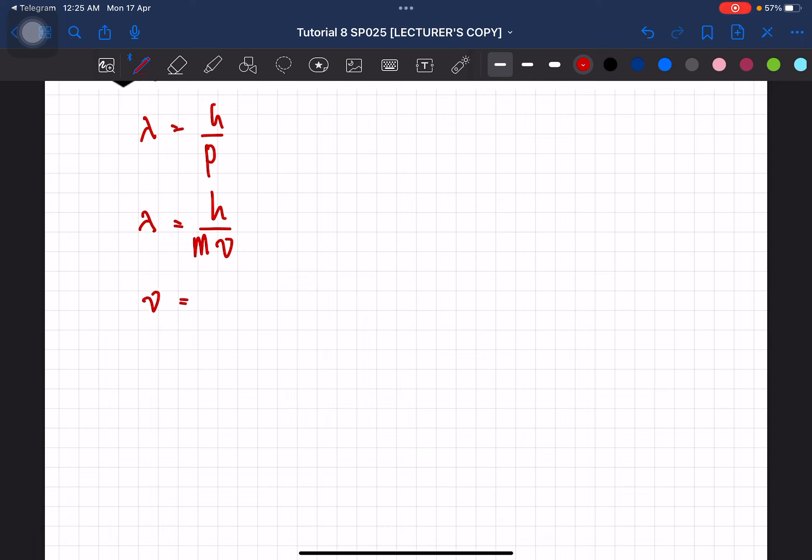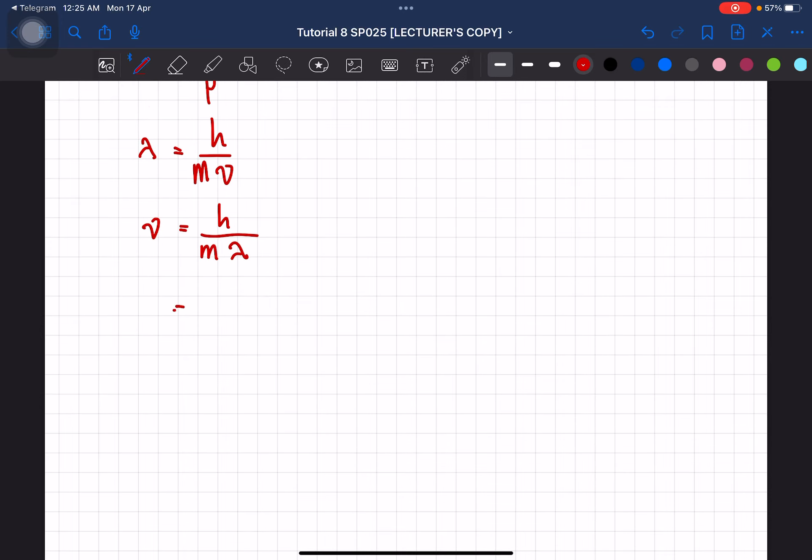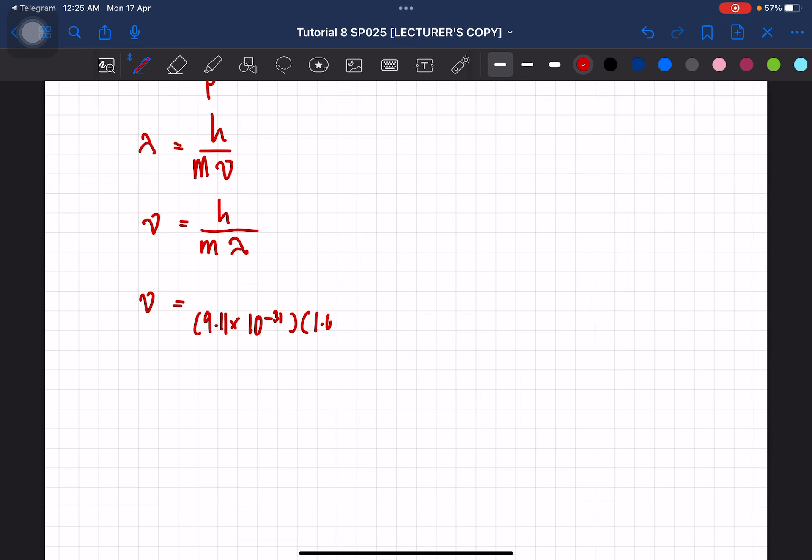So we are looking for v, so it's gonna be h over m lambda. Right, so this is v. m is given as 9.11 times 10 negative 31. Lambda is equal to 1 times 10 negative 11.